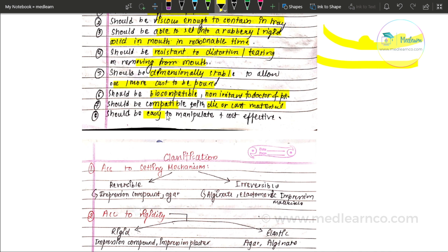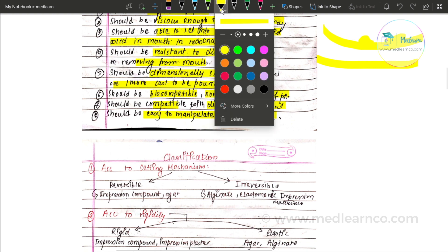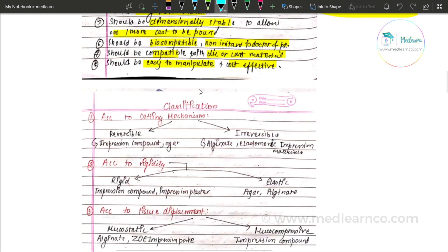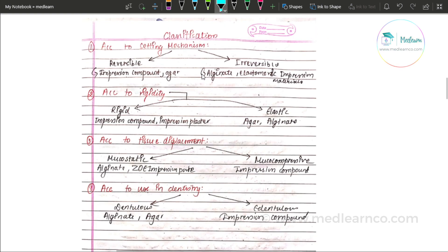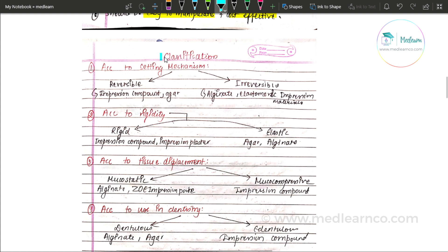It should be easy to manipulate and cost-effective. Now, classification of impression materials: there are various classifications. According to setting mechanism, they can be classified as reversible or irreversible.